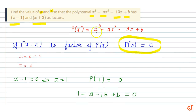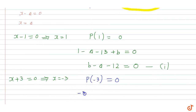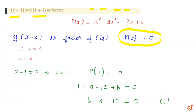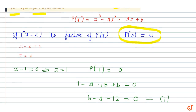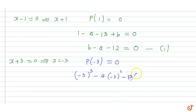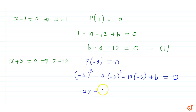We substitute x = -3 into p(x). So we get: (-3)³ minus a times (-3)², then minus 13 times (-3), plus b equals 0. That gives us minus 27, minus 9a, then minus 13 times minus 3 is plus 39, plus b equals 0.